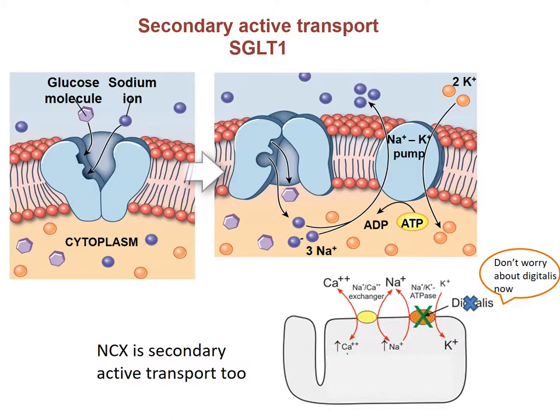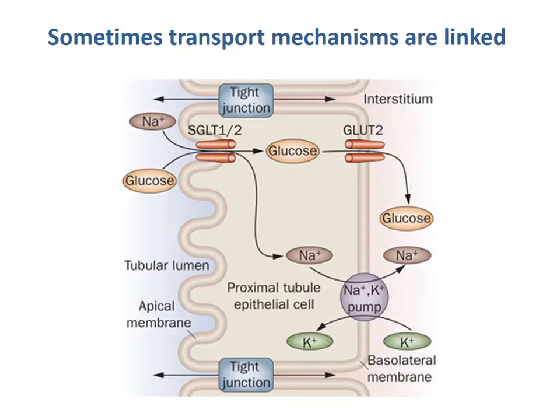The sodium-calcium exchanger is also a secondary active transport mechanism. These transport systems are not always used independently — they are often linked together. For example, SGLT1 brings sodium and glucose in, glucose is used in the cell and transported through GLUT receptors (a uniporter), and the sodium-potassium antiporter pumps maintain sodium balance. Many of these transport mechanisms are used on the same cell, working together in various ways.